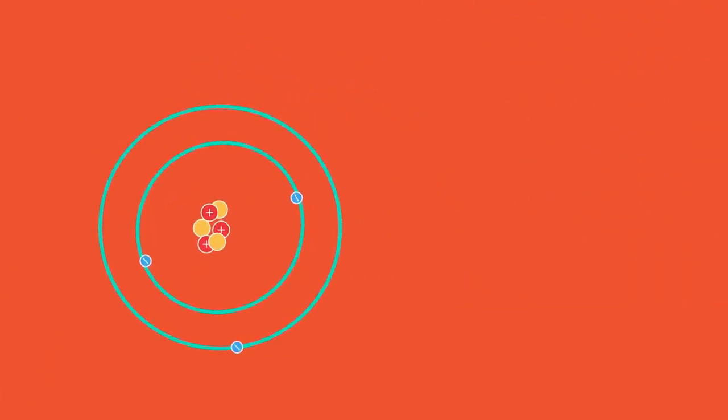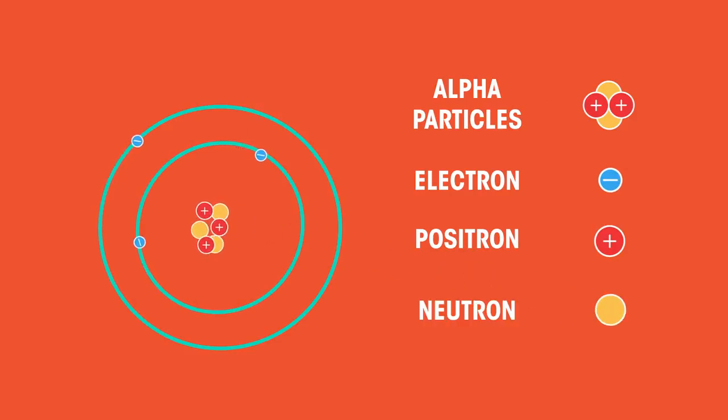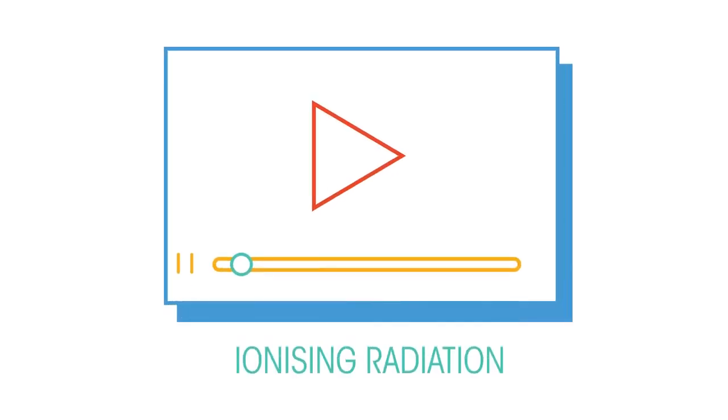Remember, the nucleus is found at the center of all atoms. Some nuclei are unstable and may emit alpha particles, beta particles or neutrons, and electromagnetic radiation as gamma rays. Watch this video to understand exactly what these types of radiations are.